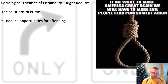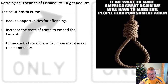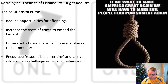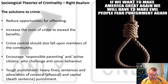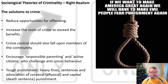Their solutions include reducing opportunities for offending, increasing the costs of crime so they exceed the benefits, and placing crime control upon members of the community. You encourage responsible parenting and active citizenship so people challenge anti-social behaviour. Punishments need to be tough — heavy fines, long sentences. Many right realists would advocate corporal punishment and the death sentence for capital crimes. As one Facebook quote puts it: 'If we want to make America great again, we will have to make evil people fear punishment again.' That is a right realist view of crime.